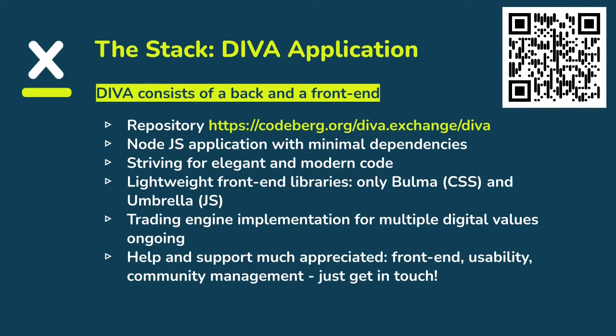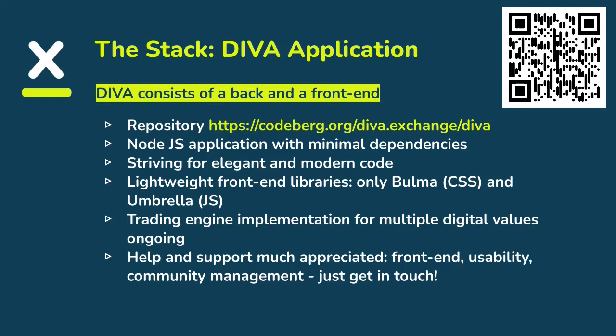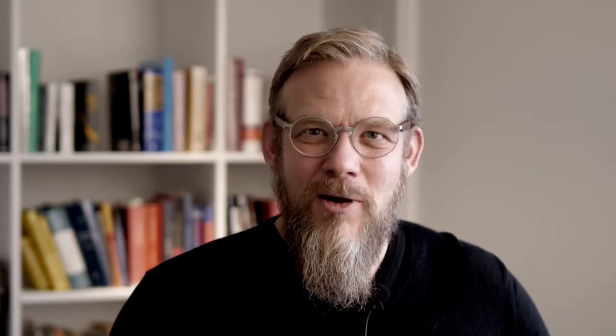Then there is the Diva application itself, which consists of a back-end and front-end. The repository is found at codeberg.org/diva.exchange/diva. It's a Node.js application with minimal dependencies — very lightweight. We're striving for elegant and modern code, and in these weeks we're working on the trading engine implementation for multiple digital values and cryptocurrencies. If you'd like to jump in and help out with the community and with diva.exchange, you're very welcome — we're an entry-level friendly project, so just get in touch.